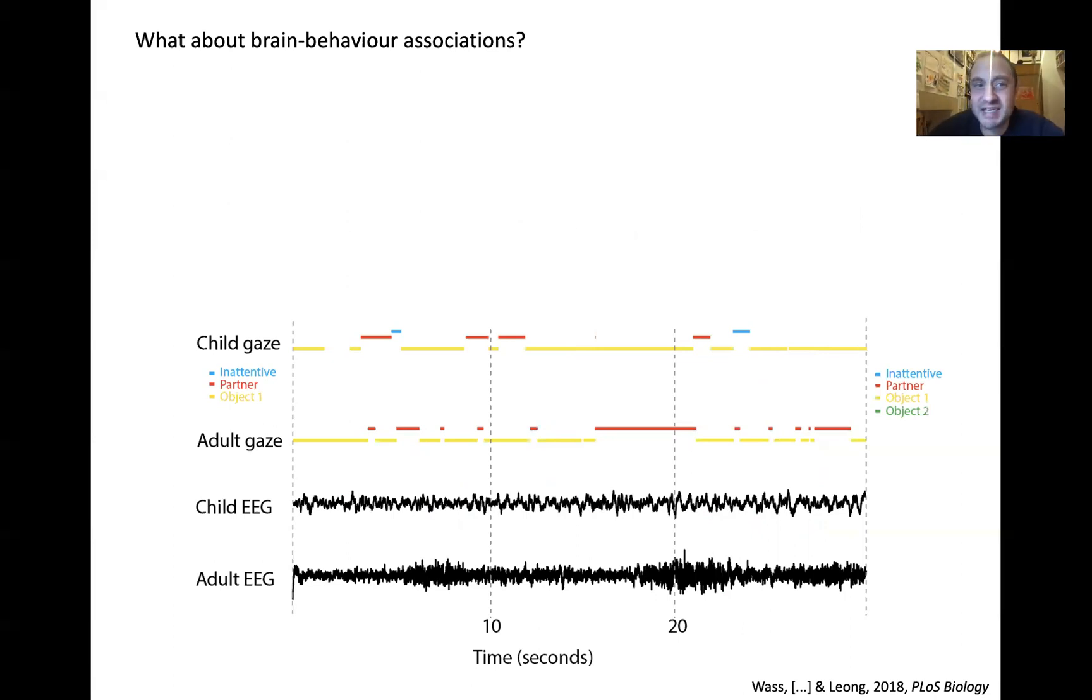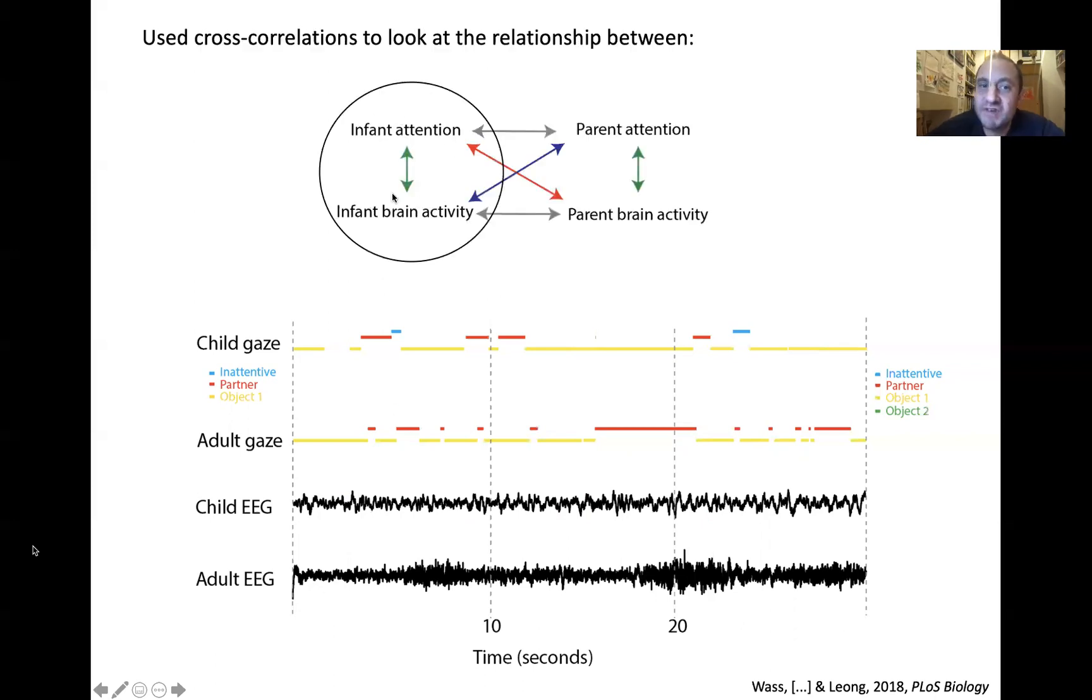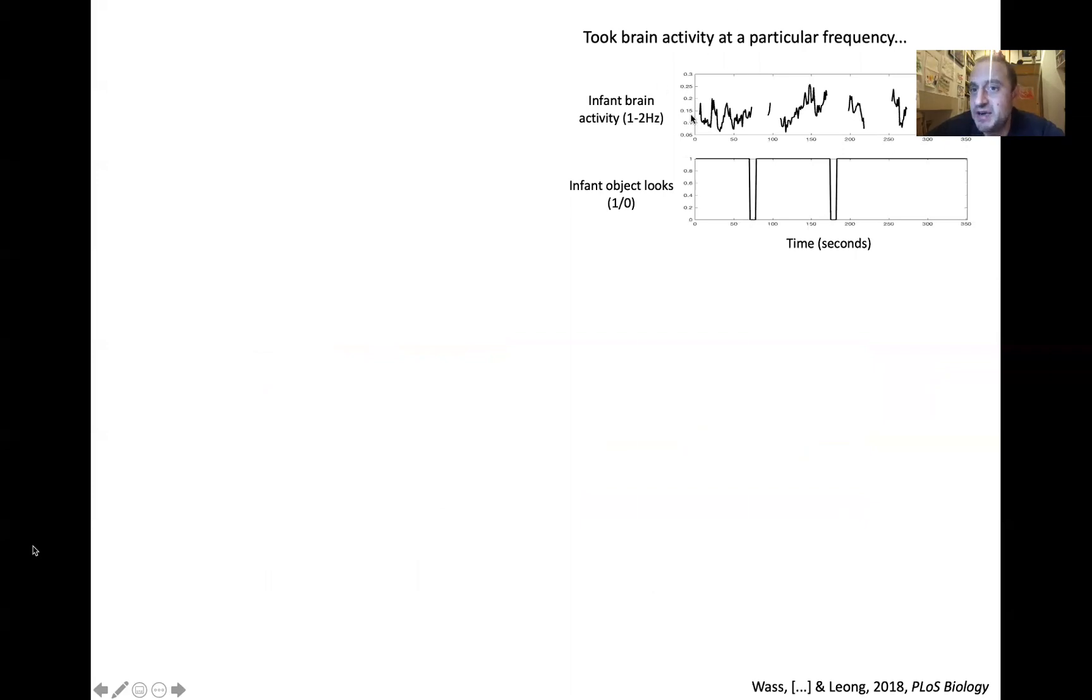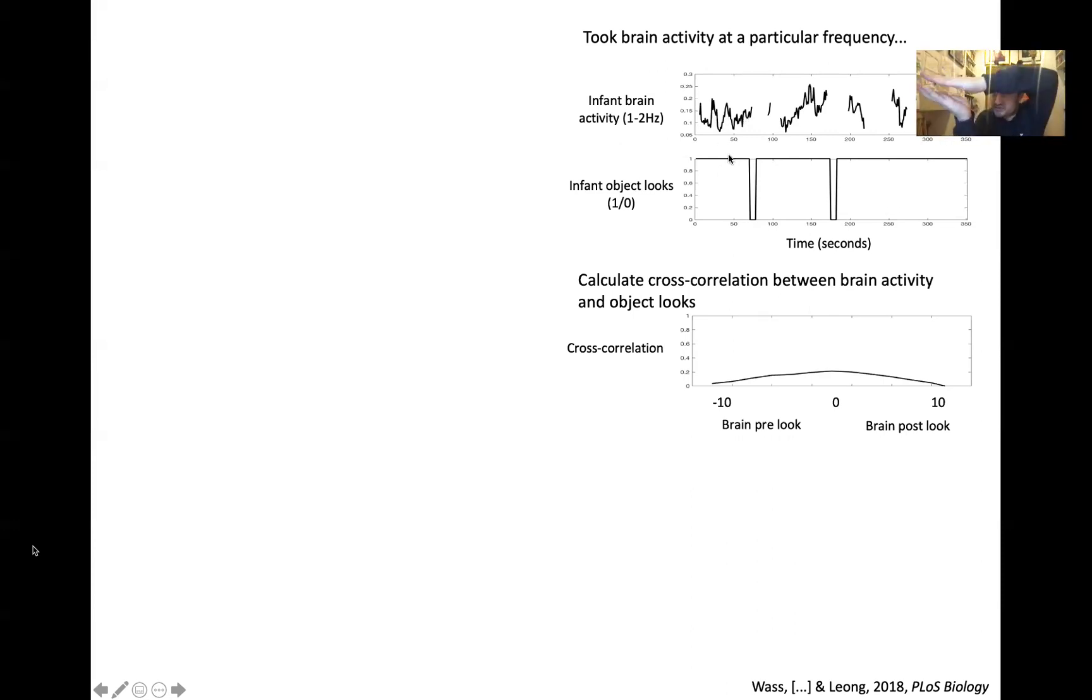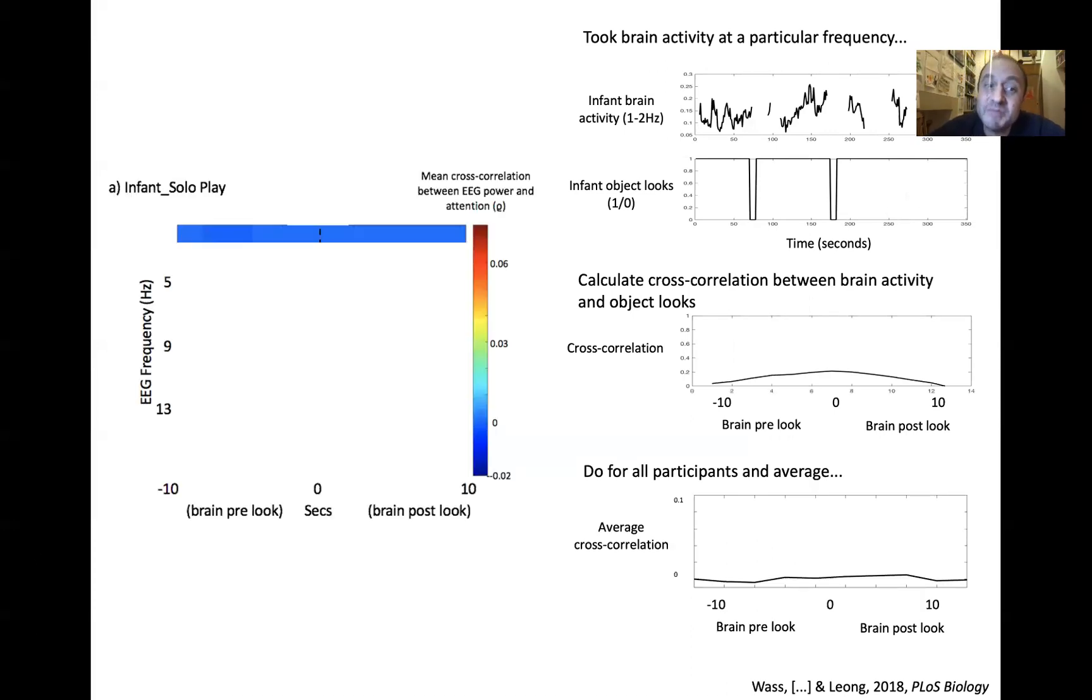That was about the first thing we're showing with these interactions. The second thing is, how does the brain activity relate to the behavior? This is the second new paper I'm going to tell you about. For this, we took a slightly different approach. We have the child gaze and adult gaze and the child EEG and adult EEG. First, we looked at the relationship between the baby's attention and the baby's brain activity. We took brain activity at a particular frequency - this is one to two hertz. Then we took the infant looking behavior - they're looking at the object or not. In this time, they're spending most of the time looking at the object with a few gaps in between. We ran a cross correlation. That's basically looking at overall, at times when the baby is looking at the object, is their brain activity in the one to two hertz range higher? The cross correlation part is if you shuffle one time series forward and backwards in time relative to the other, how quickly does this relationship drop off? We did that for each baby independently, then for all babies, then averaged it. I'm going to be building up this plot. That's the first band between one to two hertz.